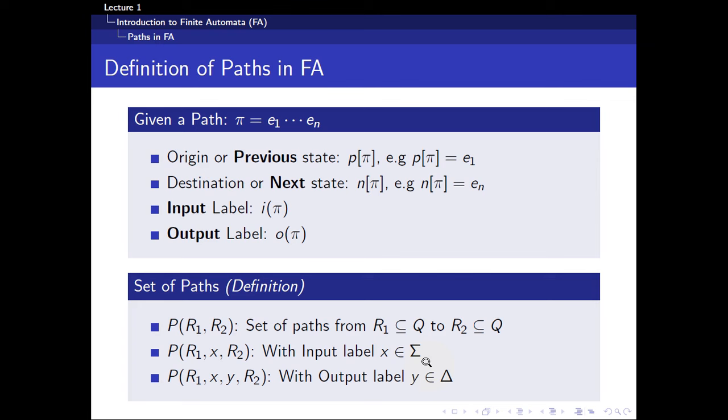More mathematically, given a path π with a transition starting from E1 all the way to EN, we denote P(π), P of π, as the previous state. For example, P of π in this case will be equal to E1 because it starts at E1. And N(π), N of π, will be known as the next state or rather the ending state of the path. For example, N of π will be equal to EN. And for this input and output label, certain finite automatons have an input and have an output.